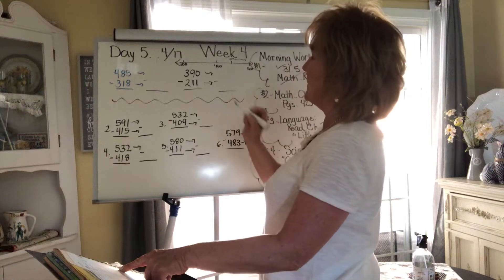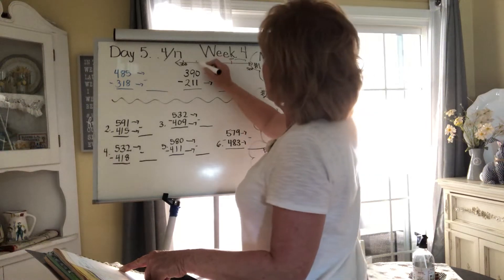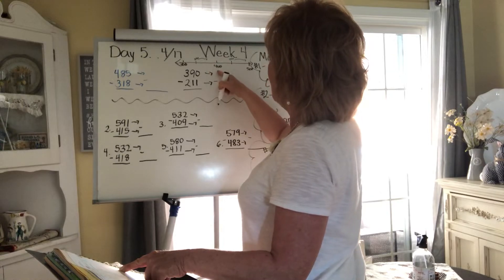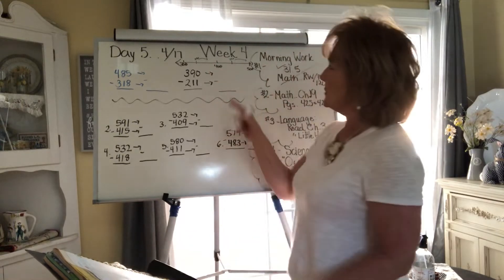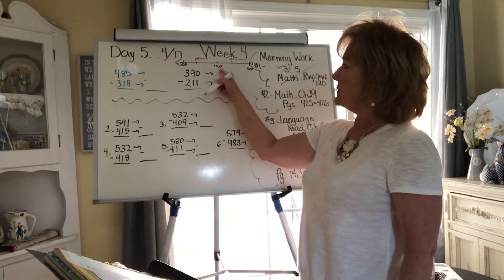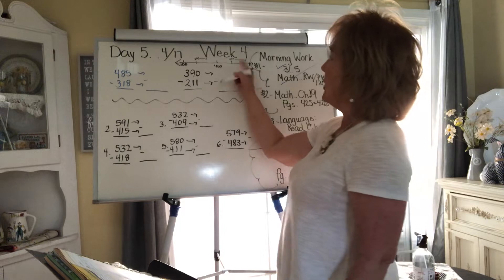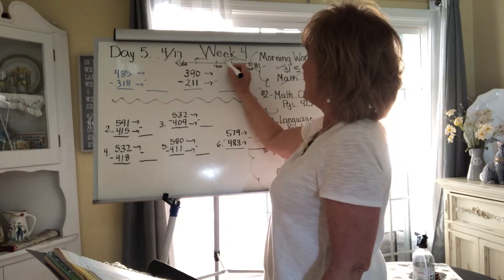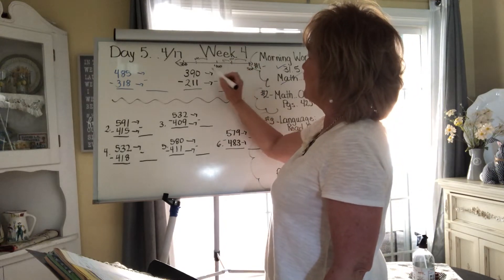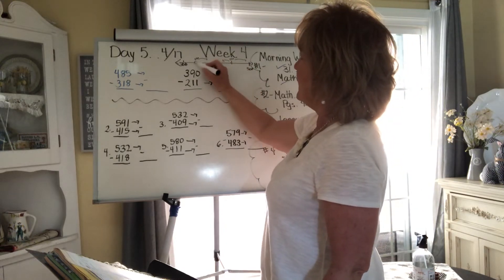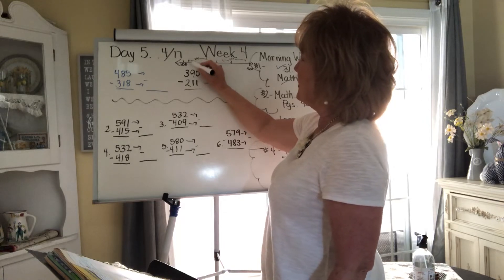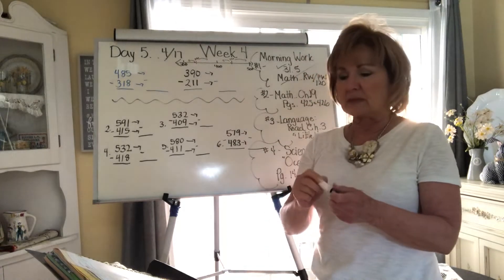450 and above, you round up. 350 and above, you round up to 400. 450 rounds to 500, 449 rounds down, 349 rounds down to 300.